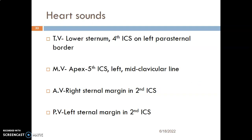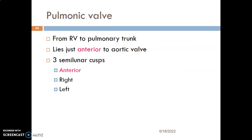For auscultation of heart sounds: the tricuspid valve is heard at the fourth intercostal space on the left parasternal border. The mitral valve is heard at the apex of the heart — the left fifth intercostal space, midclavicular line. For aortic and pulmonary valves, both are at the second intercostal space: the aortic valve on the right border of the sternum and the pulmonary valve on the left border of the sternum.